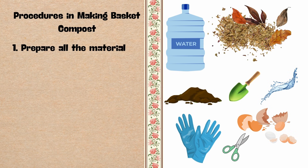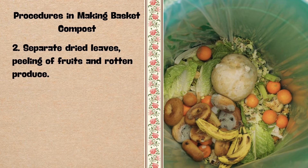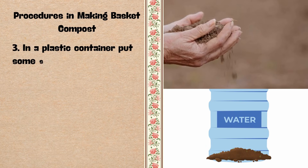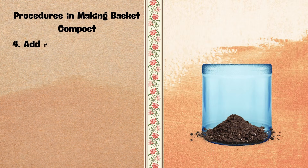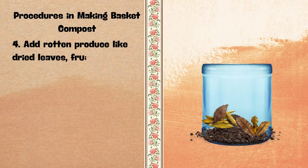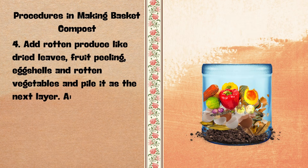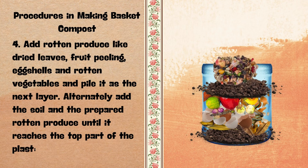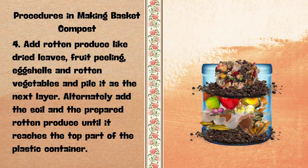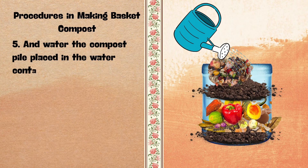Procedures for making basket compost: 1. Prepare all the materials needed. 2. Separate dried leaves, peelings of fruits, and rotten produce. 3. In a plastic container, put some soil in the bottom. 4. Add rotten produce like dried leaves, fruit peelings, eggshells, and rotten vegetables as the next layer. 5. Alternately add soil and the prepared rotten produce until it reaches the top of the container. Then water the compost pile and wait until the piled compost decomposes.